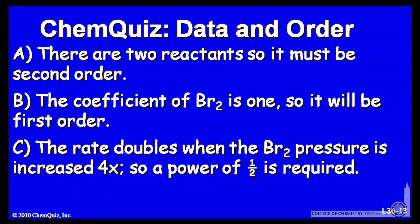C: the rate doubles when the Br₂ pressure is increased by 4, so a power of 1/2 is required. Think about those three possible explanations and make a selection.